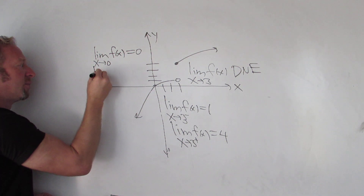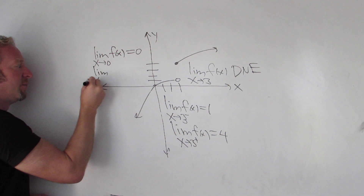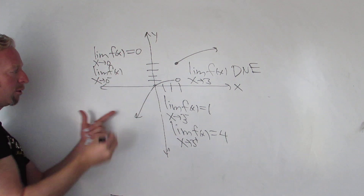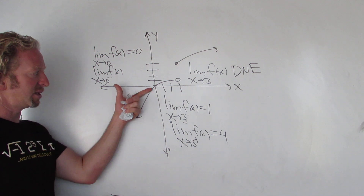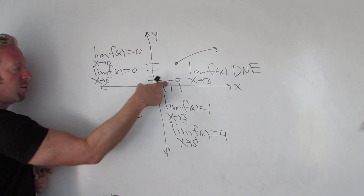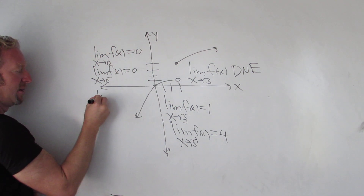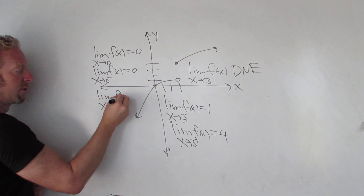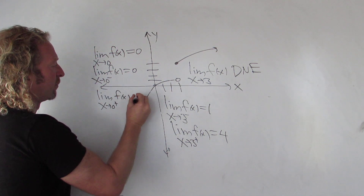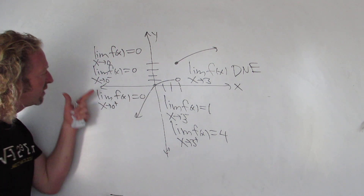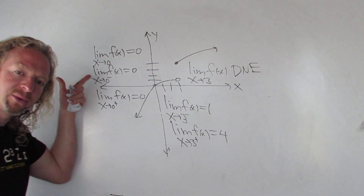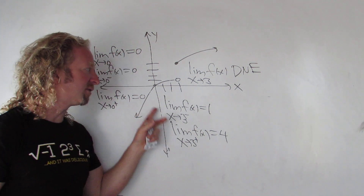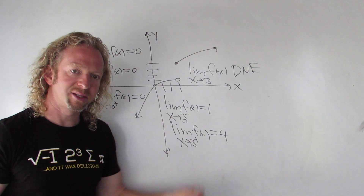If you wanted to write it formally for the x approaches 0 example: the limit as x approaches 0 from the left equals 0, and the limit as x approaches 0 from the right equals 0. Whenever you get the same answer from the left and from the right, that's the value of the limit. If you get different values, then the limit does not exist.